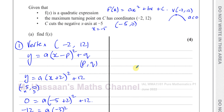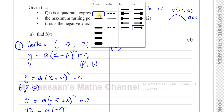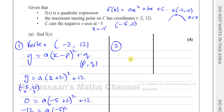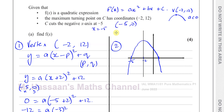We can also use the fact that we know the roots. Making a simple sketch: the curve has a root at negative 5 and a vertex at negative 2. The line of symmetry of a quadratic always passes through the vertex, so the line of symmetry is x equals negative 2. The distance from negative 5 to negative 2 is 3, so by symmetry the other root is negative 2 plus 3 equals 1. So the roots are x equals negative 5 and x equals 1.